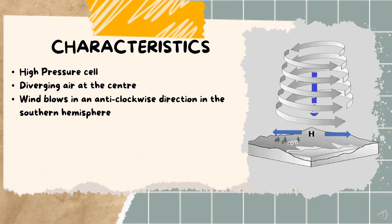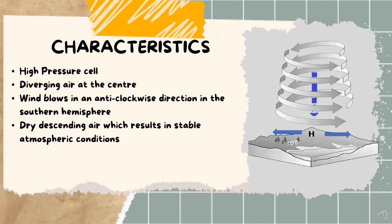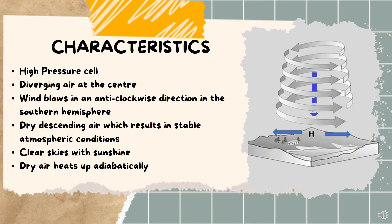Another characteristic is that it is dry. It's dry descending air, which causes a stable atmospheric condition. Unlike tropical cyclones, which caused thunderstorms, subtropical anticyclones cause stable atmospheric conditions such as a normal sunny day — as a result of the high pressure cell. Also, this dry air heats up adiabatically, meaning that as the air descends it heats up.